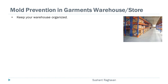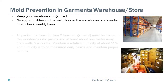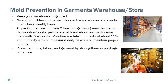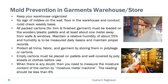Mold prevention in the garments warehouse store: keep your warehouse organized; no sign of mildew on the wall or floor in the warehouse, and conduct mold checks on a weekly basis. All packed cartons for trim and finished garments must be loaded on wooden or plastic pallets and at least about 1 meter away from the walls and windows. Maintain humidity of about 55%, measured on a daily basis with proper records. Protect all trims, fabric, and garments by storing them in poly bags or cartons. Empty cartons must be placed on pallets and well covered by poly sheet or cloths before use. When in doubt, measure the moisture content of the carton by moisture meter machine — the reading should be less than 8%. Apply first-in, first-out method for all raw materials.